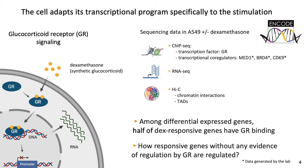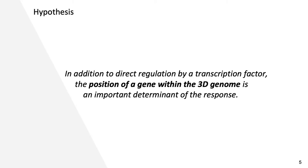Our preliminary analysis showed that among differentially expressed genes, about half of dex-responsive genes have a GR binding site. So we were wondering how dex-responsive genes without any evidence of regulation by GR are regulated. This led us to the following hypothesis: in addition to direct regulation by transcription factors, the position of a gene within the 3D genome is an important determinant.